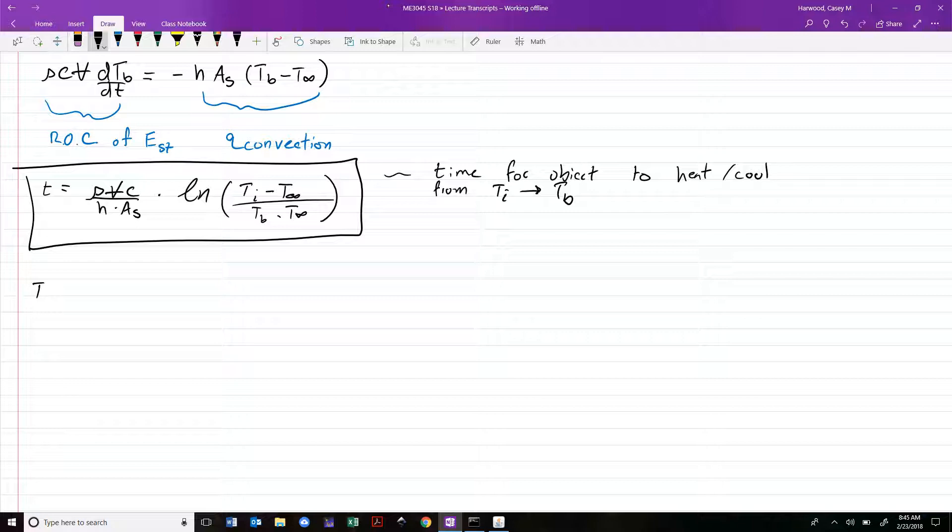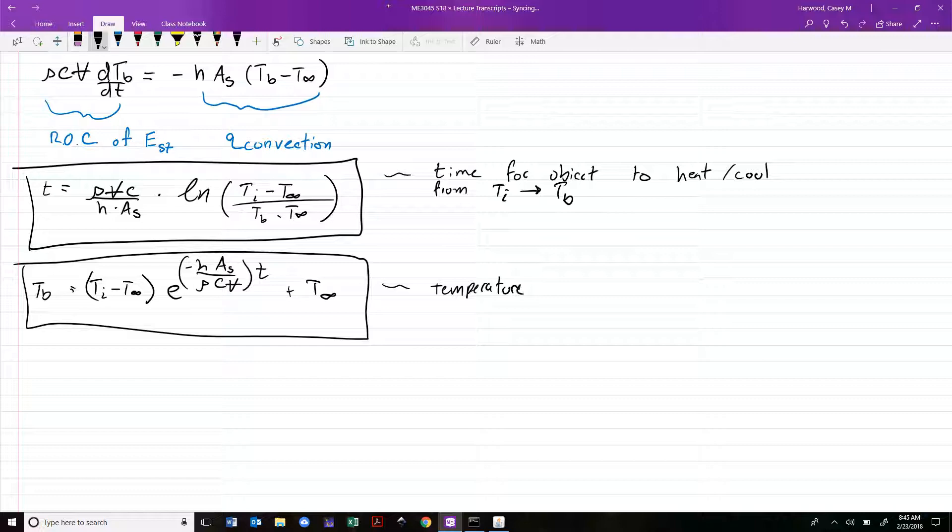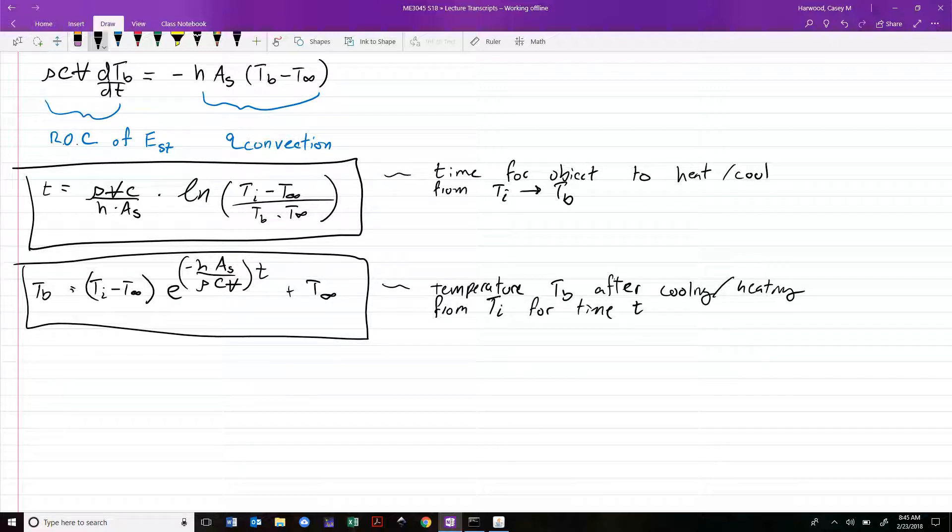The second version is T sub B equals Ti minus T infinity times the exponent of negative H S over rho C V times T, plus T infinity. This gives us the temperature T B after cooling or heating from Ti for time T. Two useful ways - these correspond to the two things we might be interested in for transient conduction.